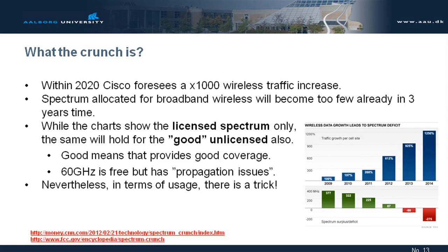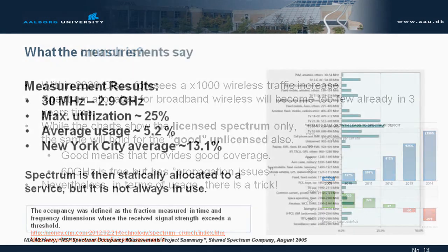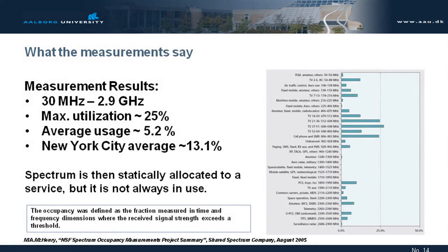The term 'spectrum crunch' has a very nice definition on the Federal Communication Commission website in their own Wikipedia. So now we know we have a problem. But there is a 'but' — there were some measurement results.